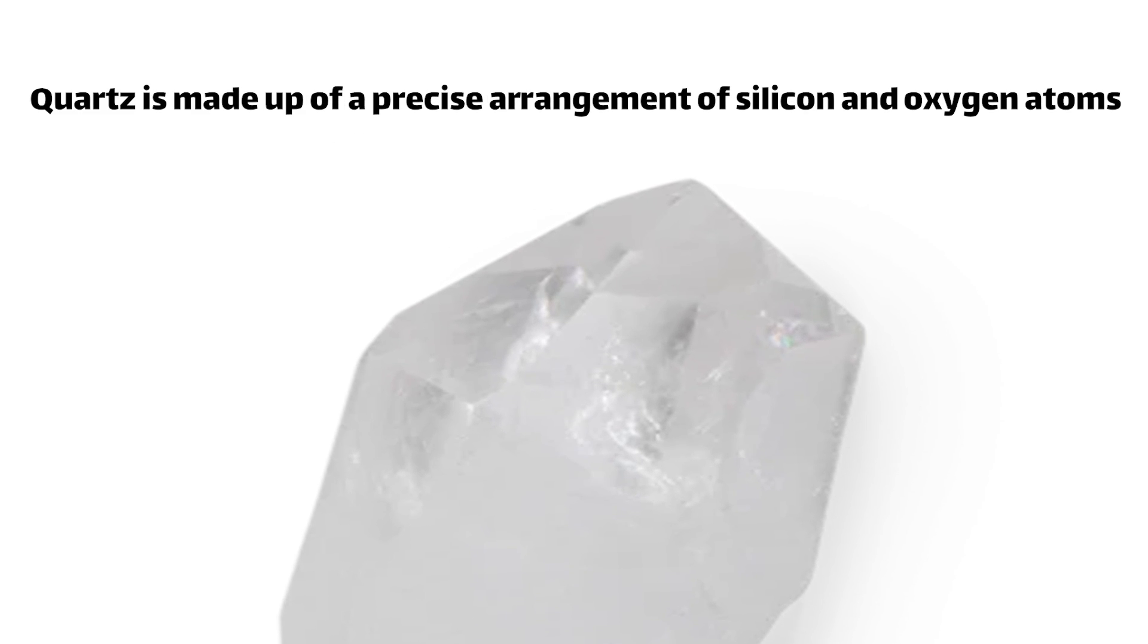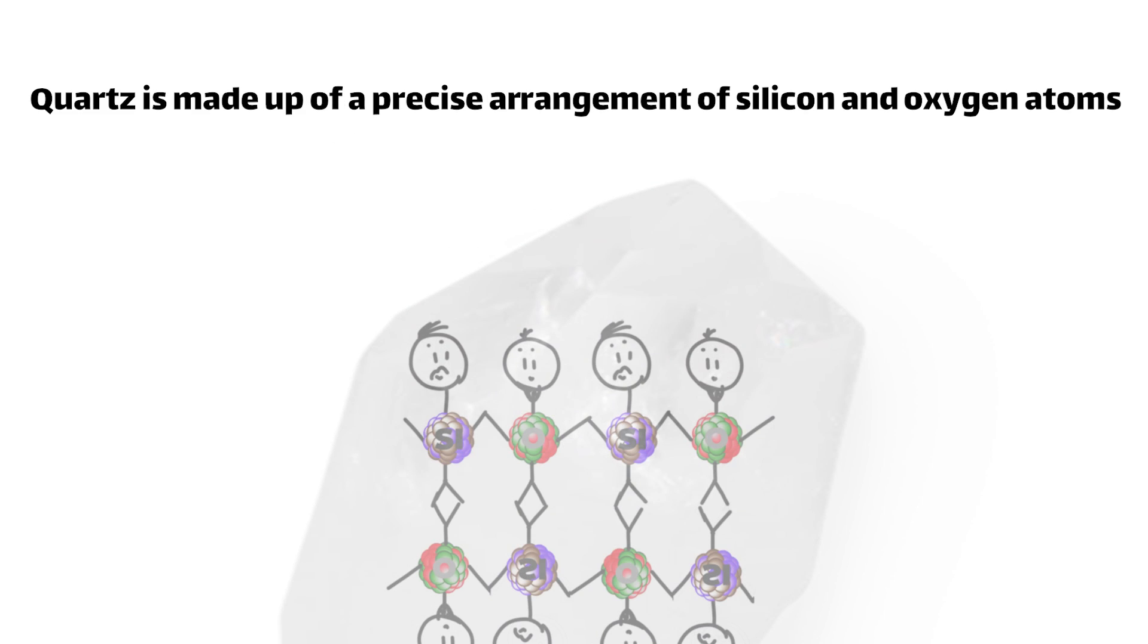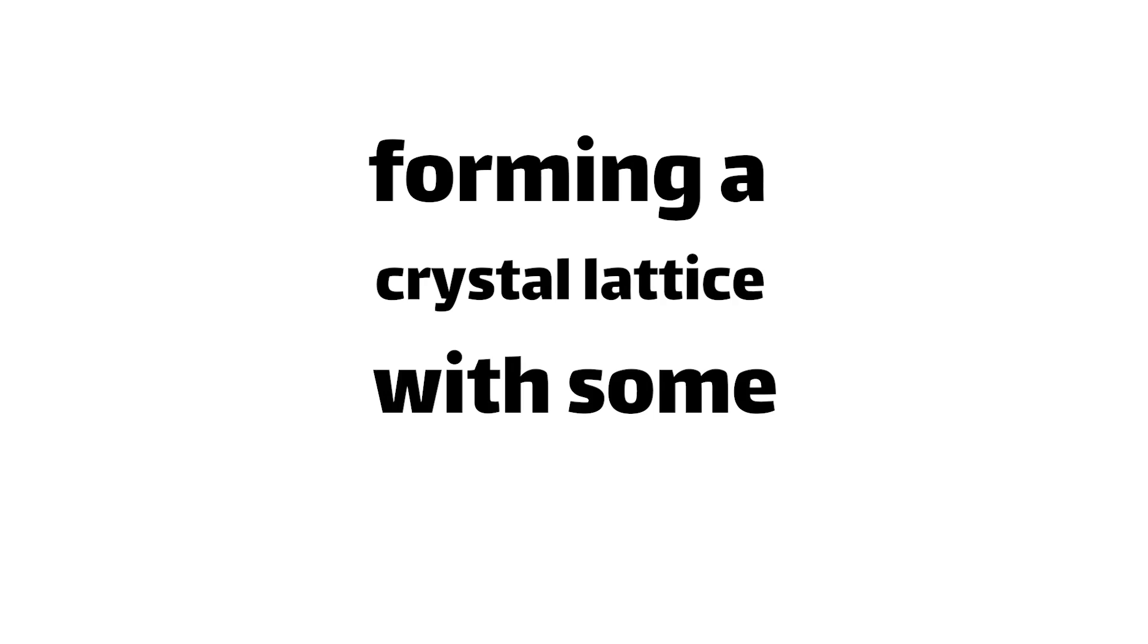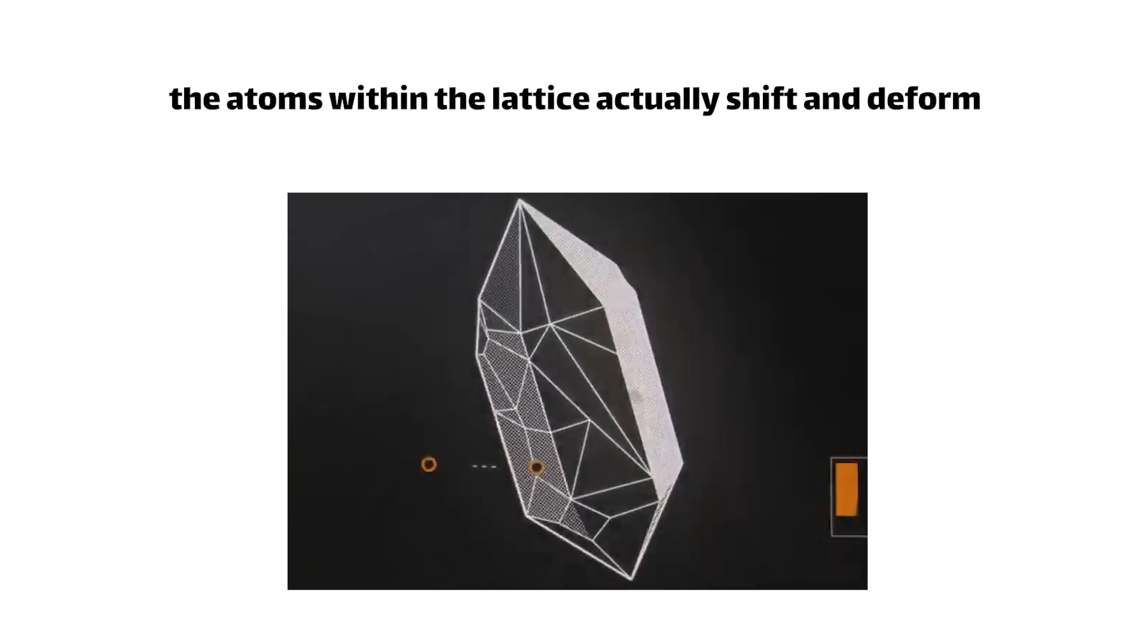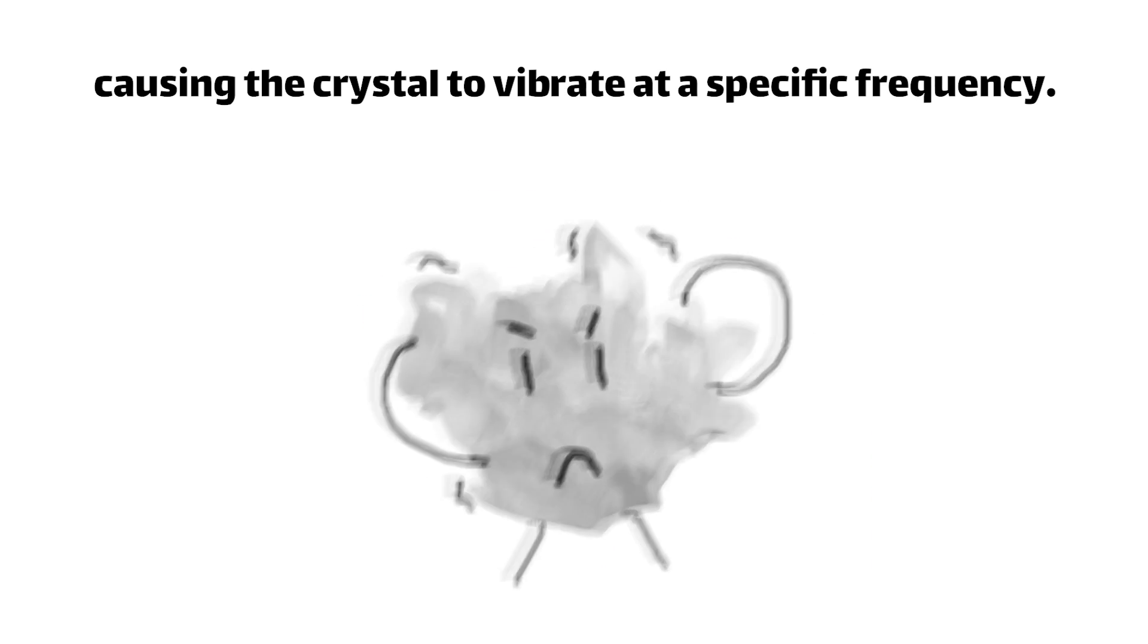Quartz is made up of a precise arrangement of silicon and oxygen atoms, forming a crystal lattice with some rather peculiar properties. When an electric current is applied to a quartz crystal, the atoms within the lattice actually shift and deform, causing the crystal to vibrate at a specific frequency.